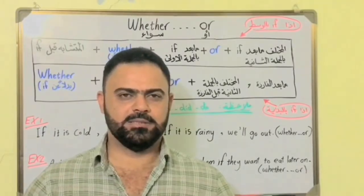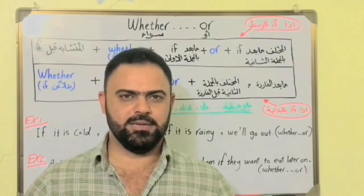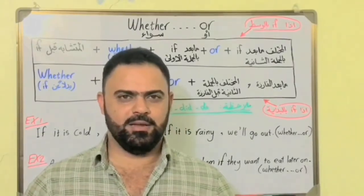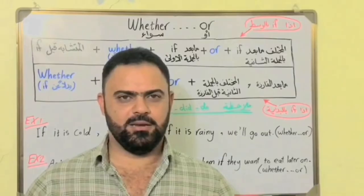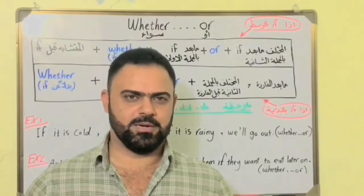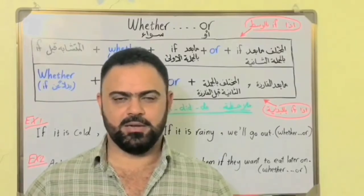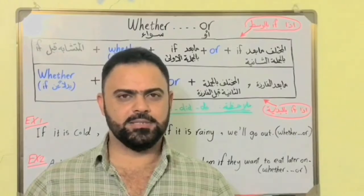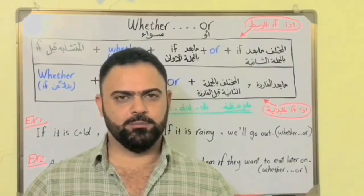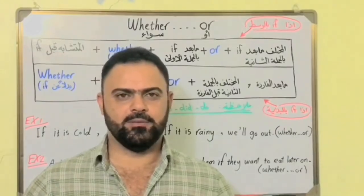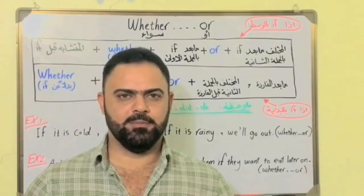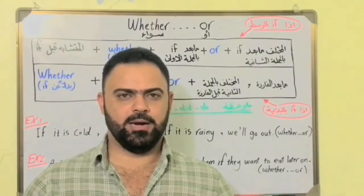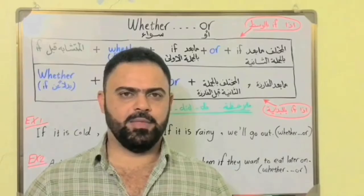مثلا: سواء قبلت أو ما قبلت، أنا رح أشارك بالمسابقة. فهنا عدي احتماليا — قبل أو ما قبل — أنا رح أشارك. أو أقول: أنا رح أطلع للخارج سواء الجو كان منطر أو بارد. أيضا احتماليا، بكل الأحوال أنا رح أطلع.